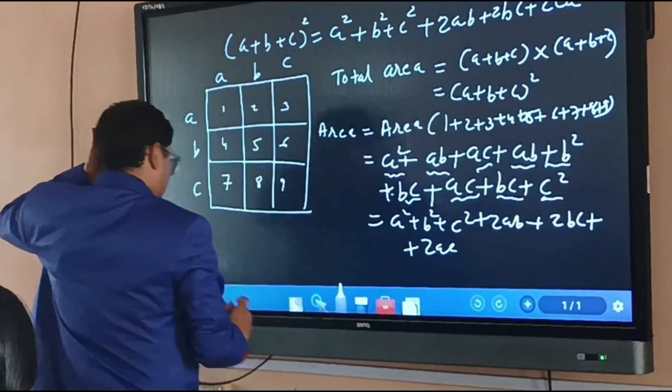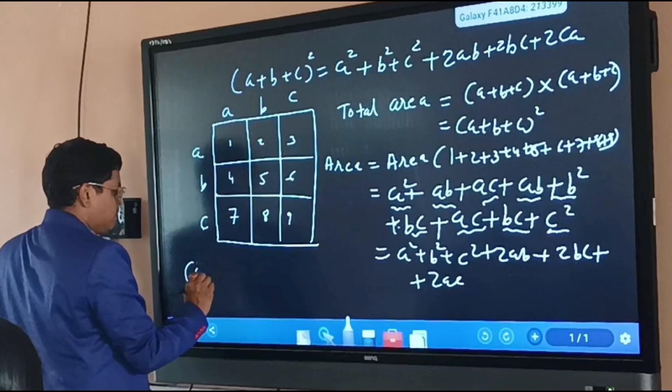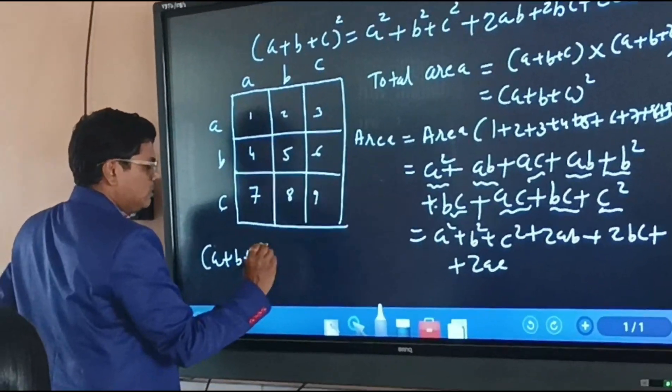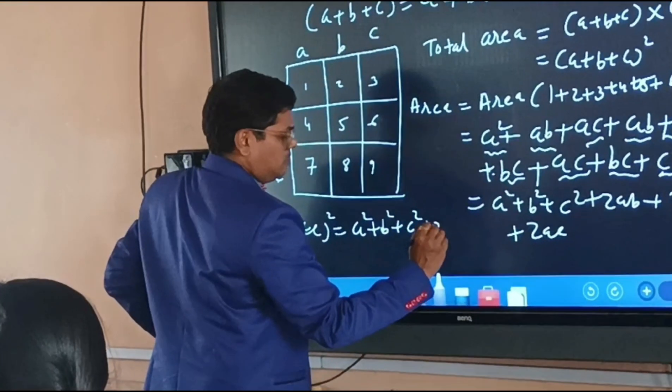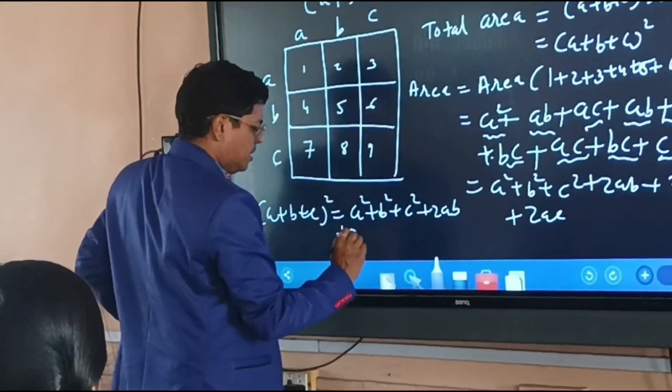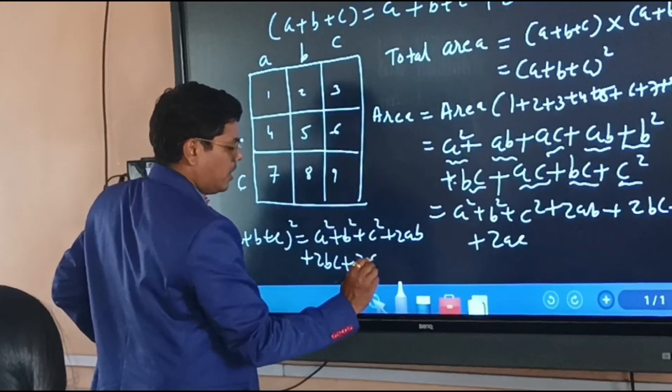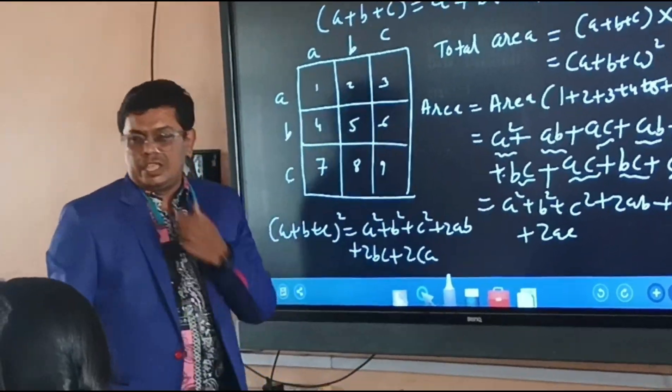So like that, we are getting the formula is a plus b plus c whole square equals a squared plus b squared plus c squared plus two ab plus two bc plus two ca. I hope you understand it. Thank you so much.